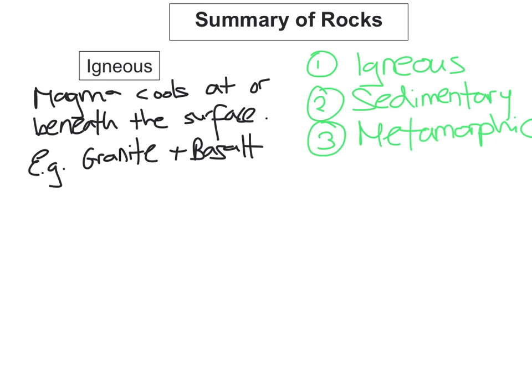And you need to know in detail one of these rocks. And the one we're going to look at is basalt. So basalt is formed when lava cools at the surface. So it cools and hardens at the surface.